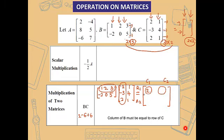Next, the element at row 1, column 2. Row 1 is from the first matrix and column 2 is from the second matrix. So: 1×1 = 1, plus 2×4 = 8, plus 3×1 = 3. Therefore 1 + 8 + 3 gives an answer of 12.